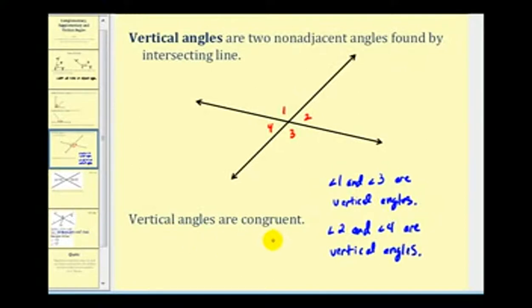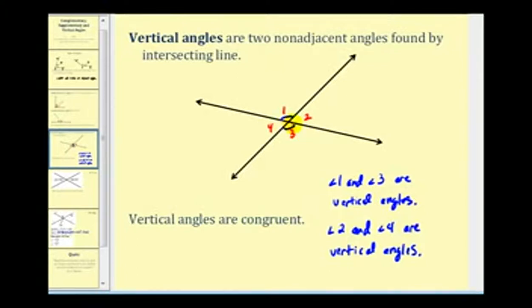All vertical angles are congruent. So angle one is congruent to angle three, meaning they have the same measure. One way of indicating this is by the number of arcs — if I use one arc for angle one and one arc for angle three, we know they have the same measure. Angle two and angle four are also congruent, so I would use two arcs for angle two and two arcs for angle four.